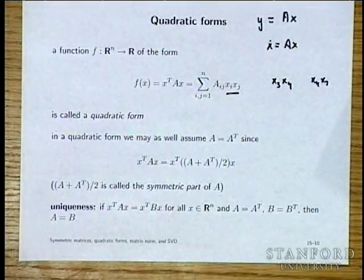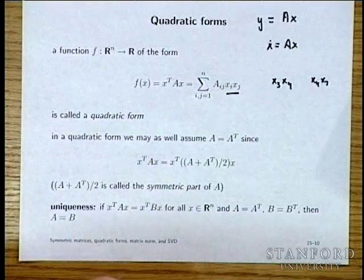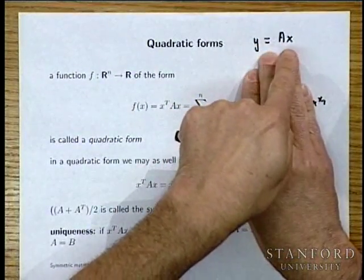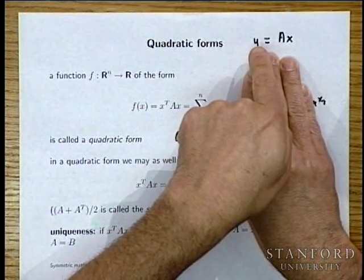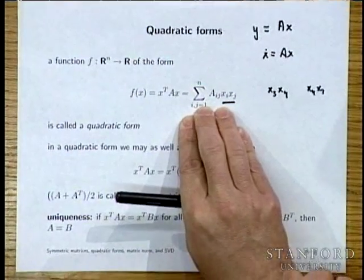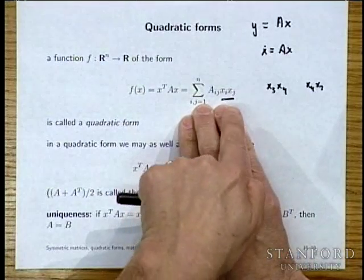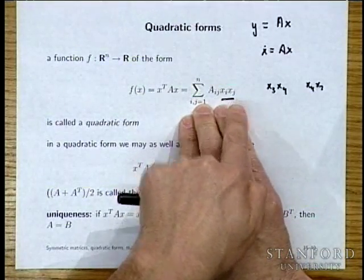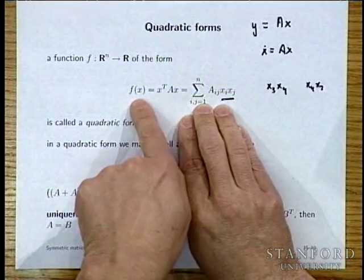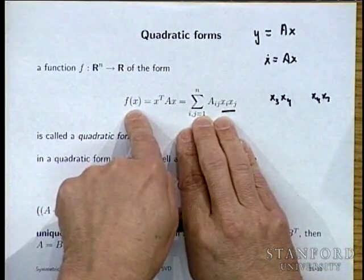When you see a matrix that represents a quadratic form and you see that an entry is large, it used to mean the gain from X_3 to Y_2 is large. Now, in the context of a quadratic form, if A_23 is large, it means something very different: variables 2 and 3 are strongly coupled, so if they're both large you get a large contribution to the quadratic form.